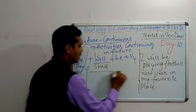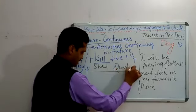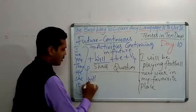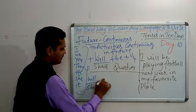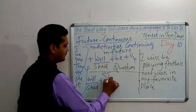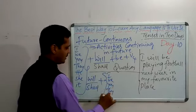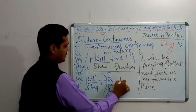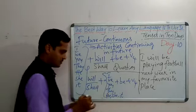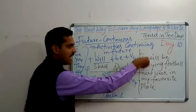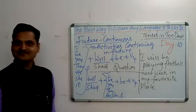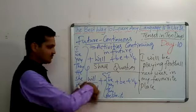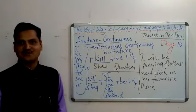How would the question pattern be? The question pattern would be: Will or shall — plus I, we, you, they, he, she, it — plus be — plus V4. For example: Will I be playing football next week in my favourite place? Just reverse it. Many other examples you can try for yourself.